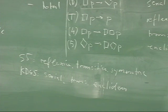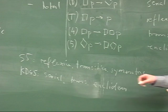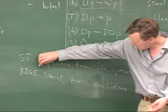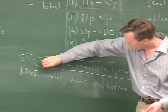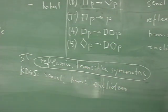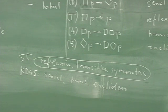A relation that has the properties of being reflexive, transitive, and symmetric is also called an equivalence relation.